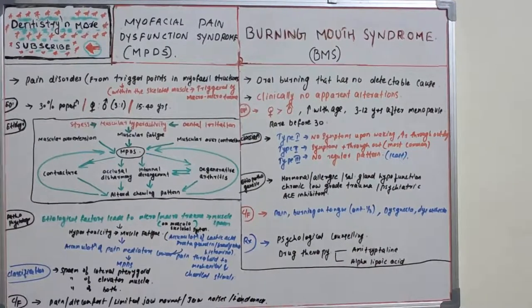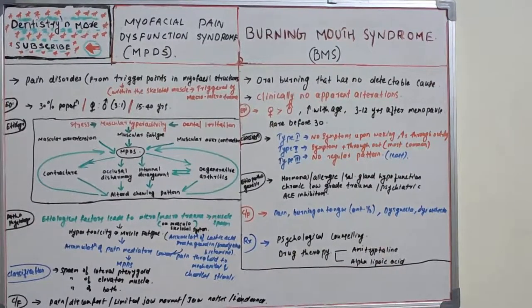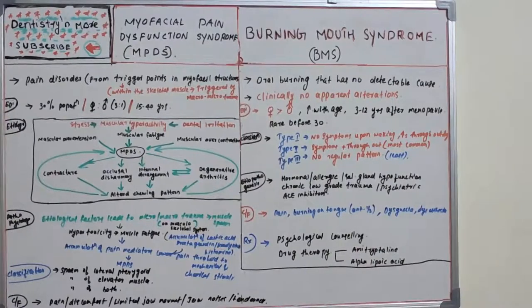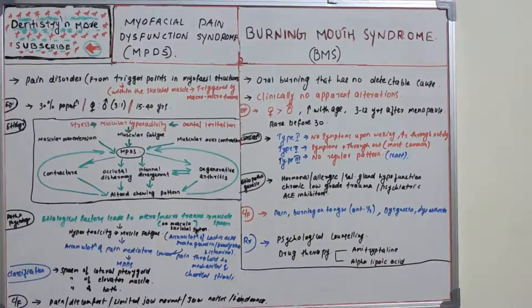Additional local factors include denture problems such as ill-fitting dentures, vertical dimension problems, median rhomboid glossitis, hypersensitivity to certain food materials, oral habits like tongue thrusting, carcinoma, and prolonged use of chlorhexidine mouthwash. Sjogren's syndrome is also a factor due to its association with dry mouth and dry eyes, which can cause burning sensation.